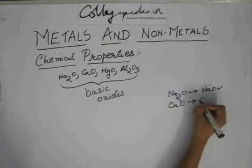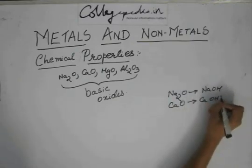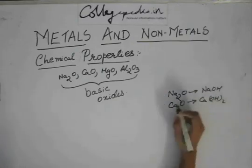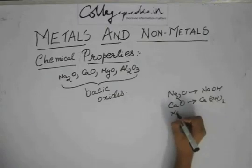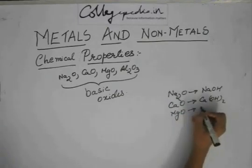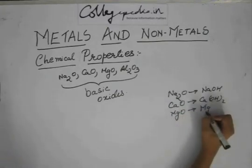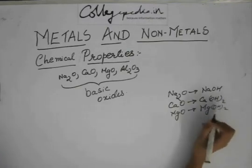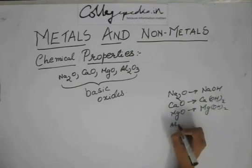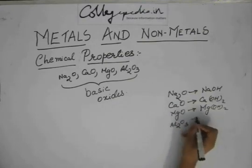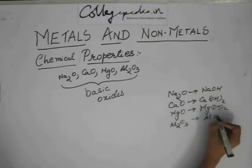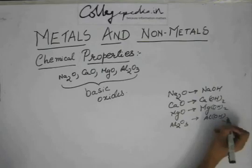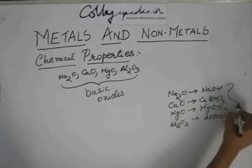MgO will form Mg(OH)2, and Al2O3 will form Al(OH)3. So all these are bases. These are all basic oxides because they react with water to form bases.